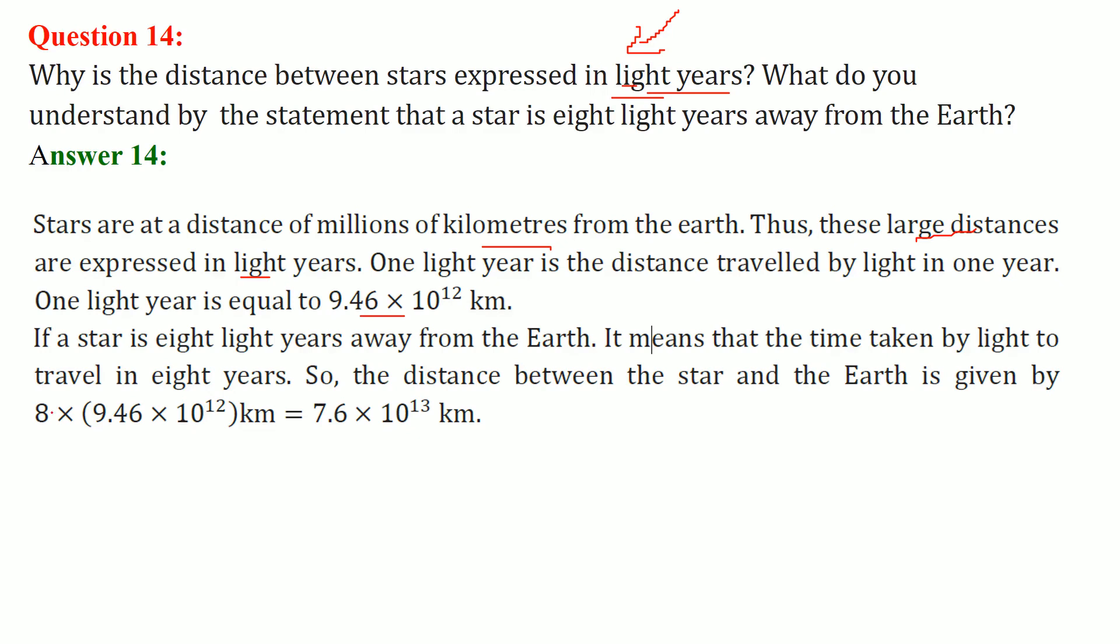What do you understand by the statement that a star is 8 light years away from the Earth? That means the time taken by light to travel in 8 years. That will be 8 × 9.46 × 10^12, which is equal to 7.6 × 10^13 kilometers.